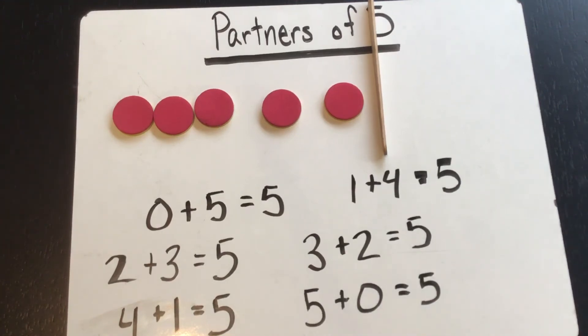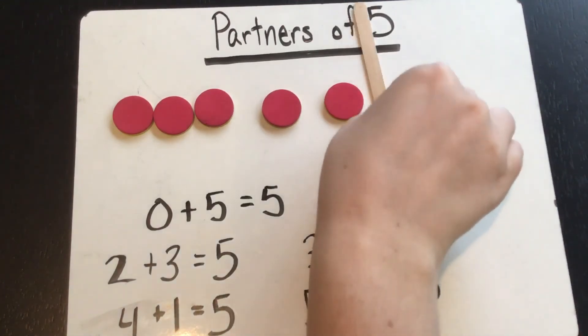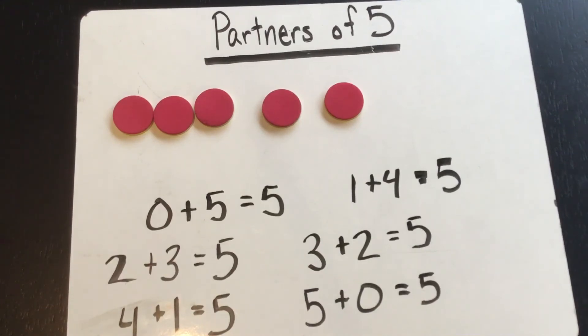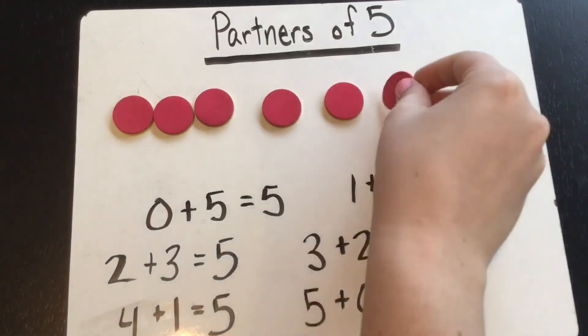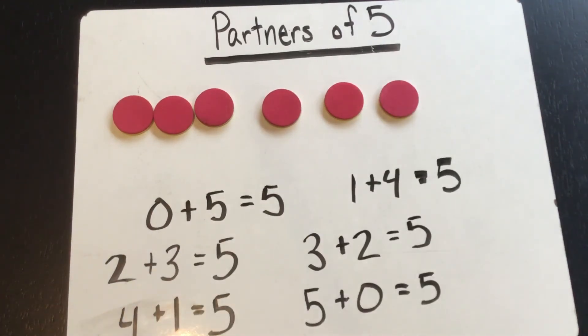So I have a challenge for you guys. At home I would love it if you could try and do the partners of six on your own. So instead of having five objects, you're going to need six. You can use six Legos, six stuffed animals, you can use even six fingers. Anything that you have at your house.